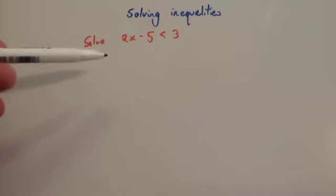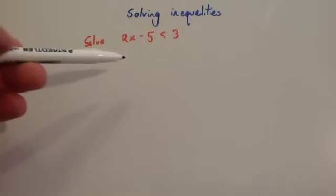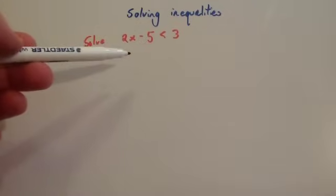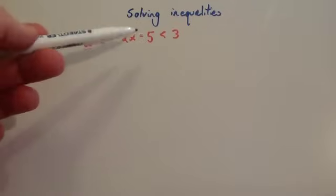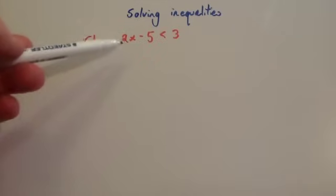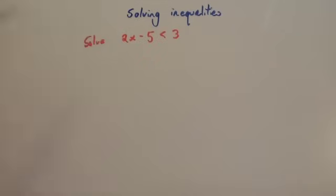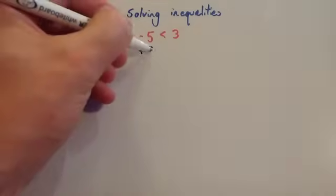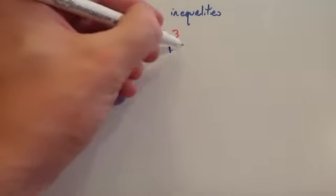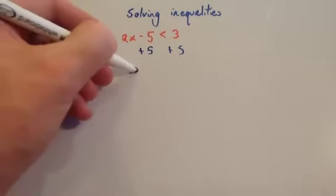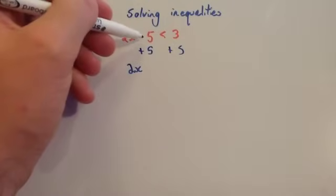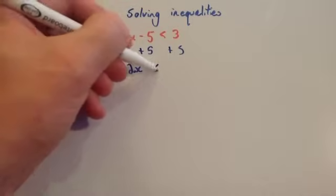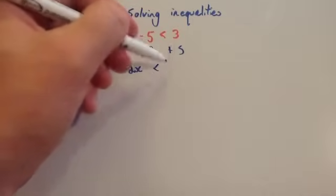So if you wanted to solve 2x subtract 5 is less than 3, you want to get x on its own on the left hand side. You'd want to get rid of the minus 5 and the times by 2. So let's get rid of the minus 5 first by adding 5 to both sides of the inequality. So you're going to get 2x, and adding 5 to minus 5 makes 0 so it disappears, and is less than 3 plus 5 which is 8.